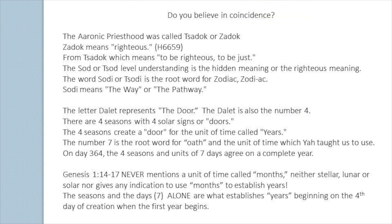Do you believe in coincidence? The Aaronic priesthood was called Zadok. Zadok means righteous, from the root meaning to be righteous or to be just. The Sode or Zod level understanding is the hidden meaning or the righteous meaning. The word Sodi or Zodi is the root word for Zodiac, and Sodi means the way or the pathway. The letter Dalit represents the door — the Dalit is also the number four. There are four seasons with four solar signs or doors. The four seasons create a door for the unit of time called years. The number seven is the root word for oath — Shavuah — and the unit of time which YAH taught us to use.